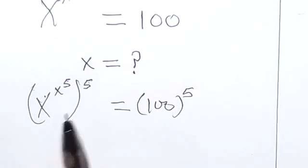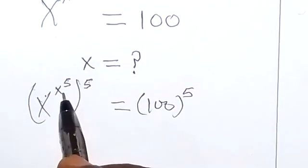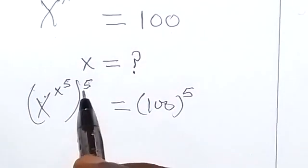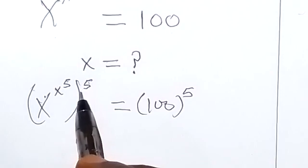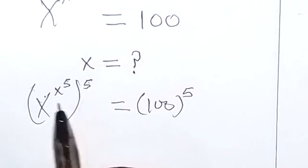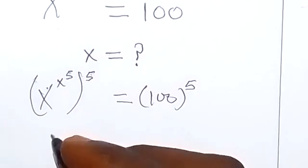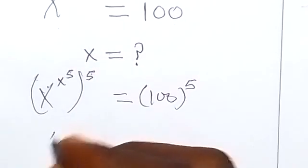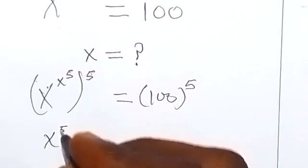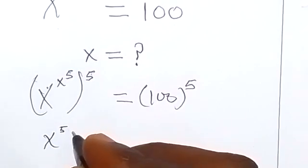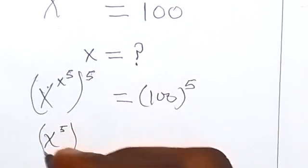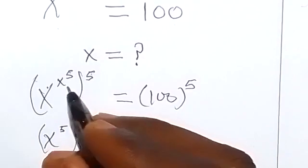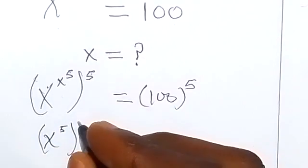These two powers multiply each other and therefore we can interchange them. So we can write it as x raised to power 5, then I can write this power here which is also x raised to power 5.